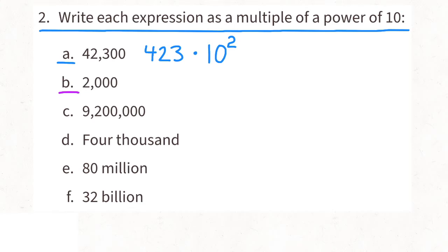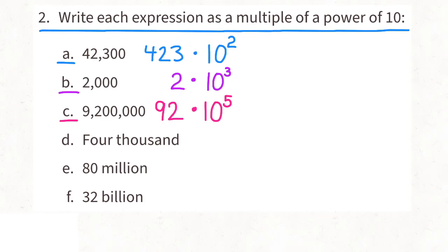B: two followed by three zeros. Those three zeros tell me the value is a thousand times bigger than two. So we can write 2 times 10 to the power of 3. Ten to the third is 10 times 10 times 10, which is a thousand, and two times a thousand is two thousand. C: we have a nine and a two followed by five zeros. Those five zeros tell me the value is 100,000 times larger than 92. So we can write 92 times 10 to the power of 5. D: four thousand — that's four followed by three zeros. Those three zeros tell me the value is a thousand times greater than four. So we can write 4 times 10 to the power of 3.